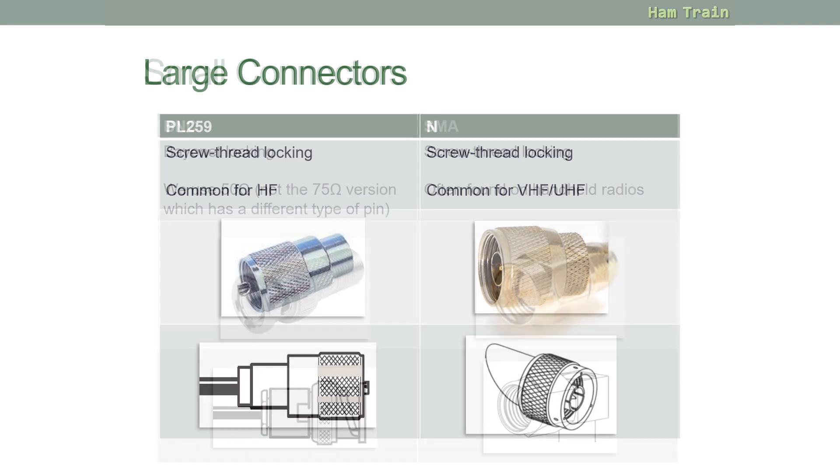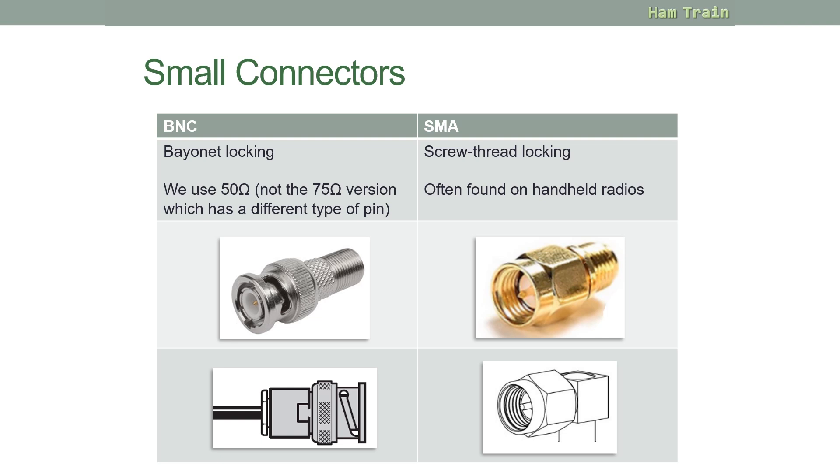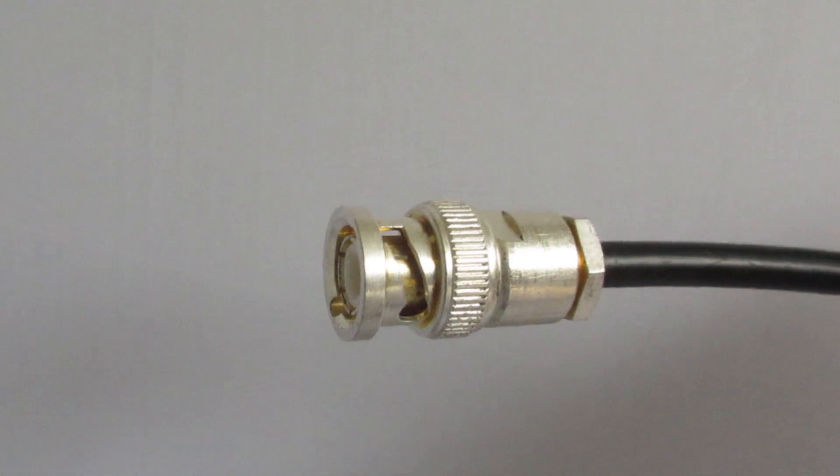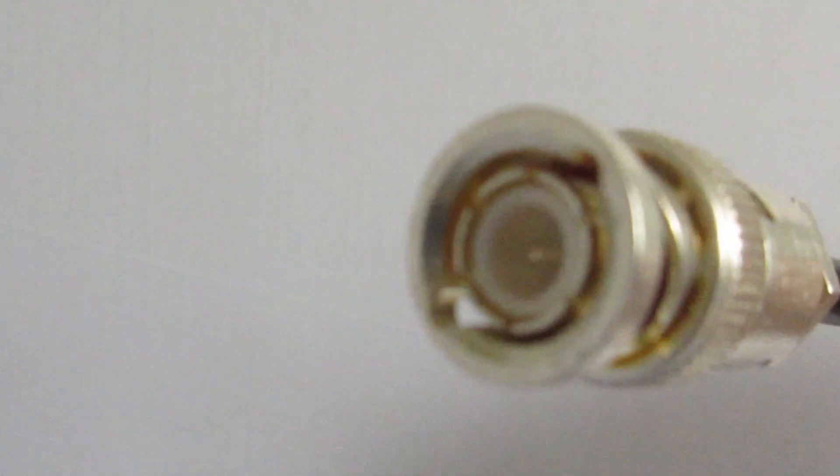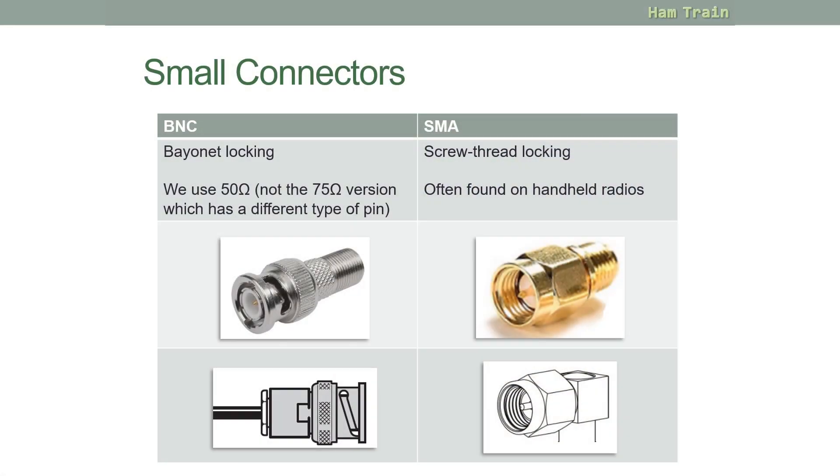Moving on to the smaller of the connectors, we have a BNC connector, which is bayonet locking. A little bit like some of the old light bulbs where you have to push in and twist. Here is the bit where you twist and lock the connector into place. Be aware that there are two types of BNC connectors out there, 50 ohms and 75 ohms. We as amateurs use the 50 ohm version. This is a picture of a 50 ohm BNC and the line drawing that you might see in the exam.